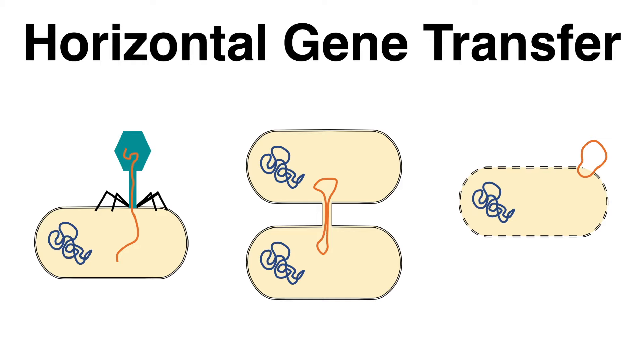There are different ways on how genes are transmitted among organisms. The generic term for those subtypes is horizontal gene transfer.